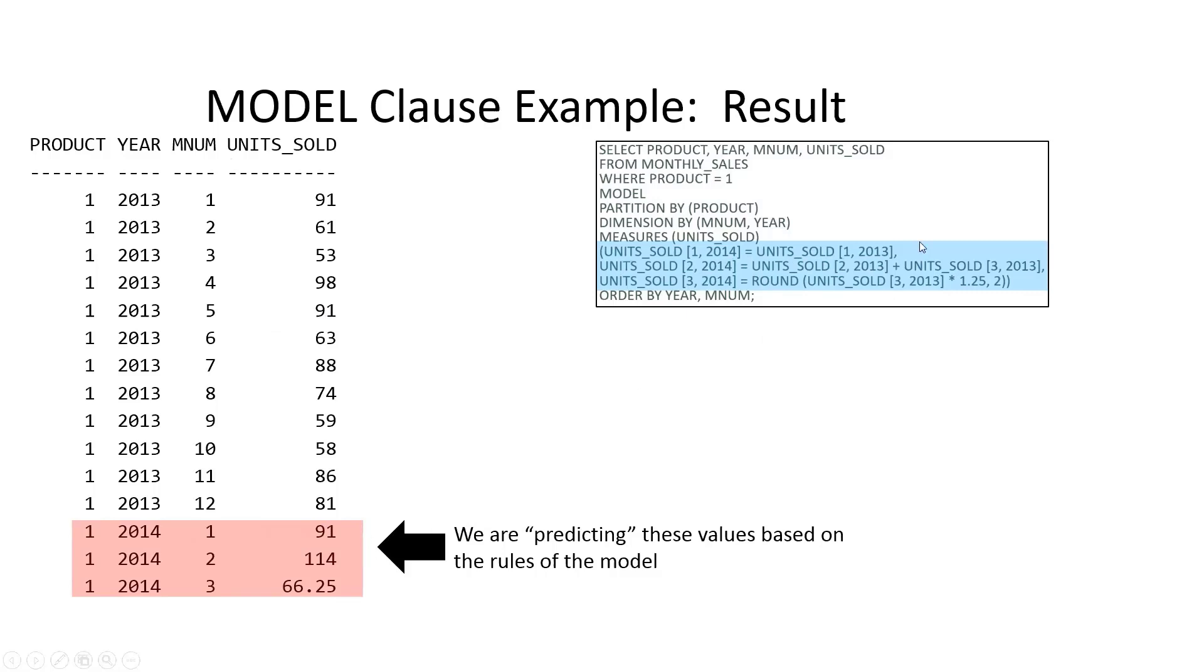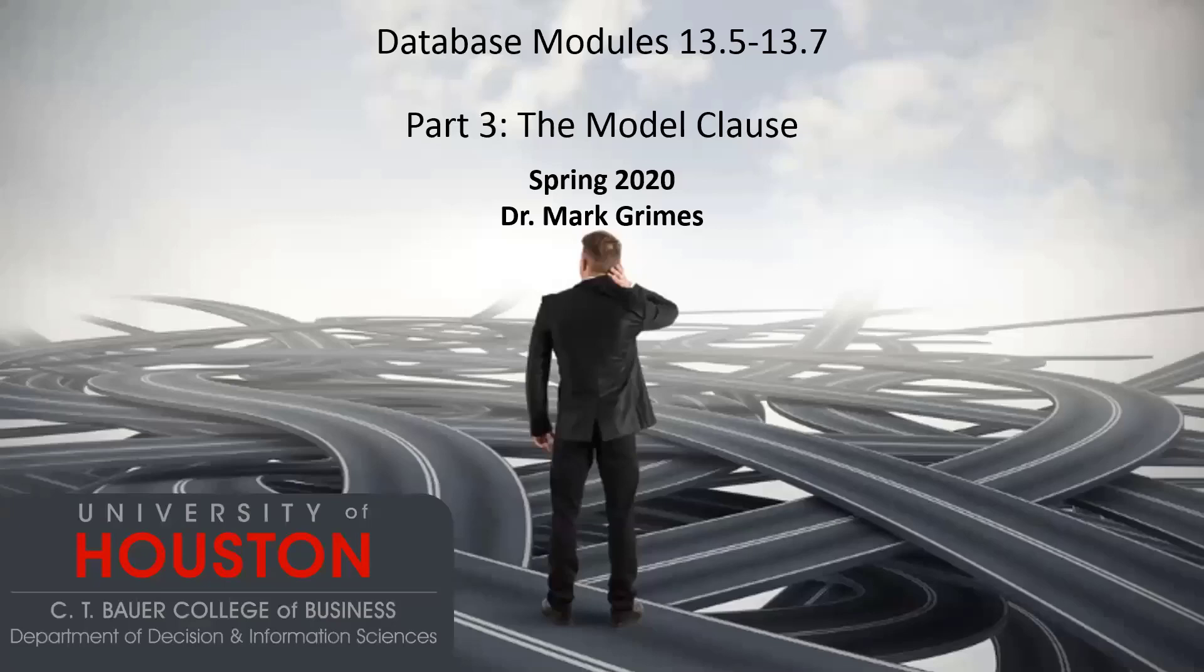So we could have something a little bit more sophisticated here and use that algorithm to predict what the future is going to look like. So that is just a very brief overview of the model clause and what we can do with that. Hopefully, you can imagine where you might be able to do some more sophisticated predictions and use that in the future. Hopefully, that's another useful tool to have in your tool belt.